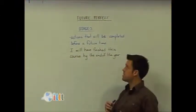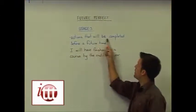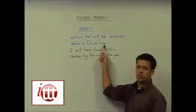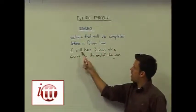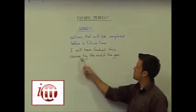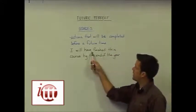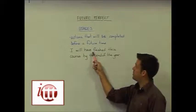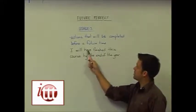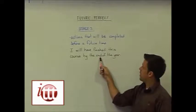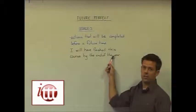The usage for the future perfect tense is to speak about actions that will be completed before a future time. Our example sentence reads: 'I will have finished this course by the end of the year.' Here we're relating a future action — finishing something — to another point in the future, which is the end of the year.